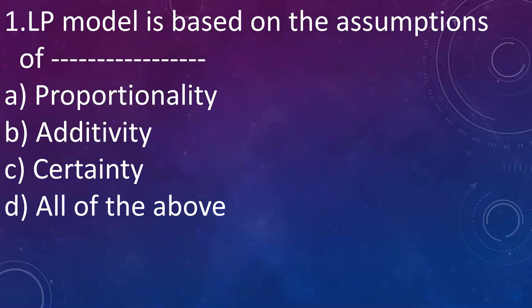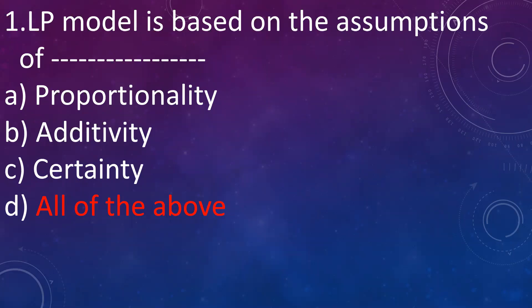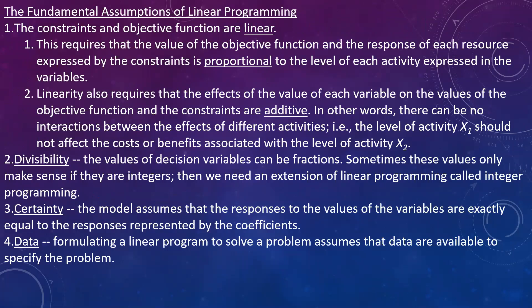LP model, that is linear programming model, is based on the assumptions of: A. Proportionality, B. Additivity, C. Certainty, D. All of the above. The assumptions of linear programming model are all of the above — that is proportionality, additivity, and certainty. So these are the fundamental assumptions of linear programming.